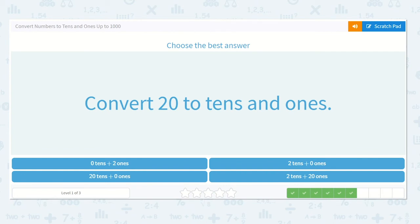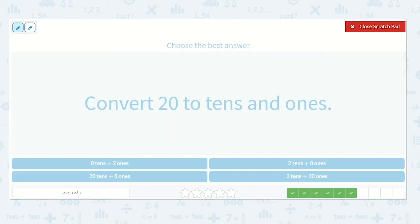They want us to convert twenty to tens and ones. Here, I see the number twenty. And they want us to tell them how many tens there are and how many ones there are. Well, if I drew this out,